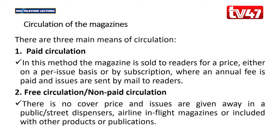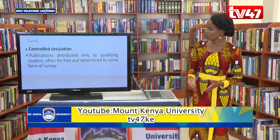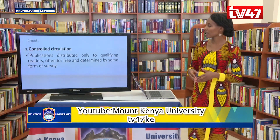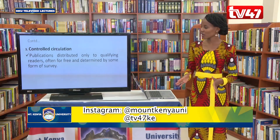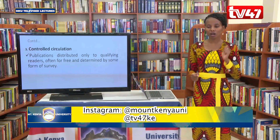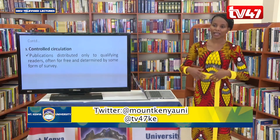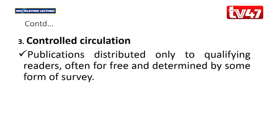There is also another means of circulation: controlled circulation. With controlled circulation, magazines are circulated only to qualifying readers. Most of the time they are offered for free, but only to those readers who qualify. To determine which group of people qualify to have the magazine, a survey is conducted. This is a method where publications are offered for free only to qualifying readers, and you must conduct a survey to conclude who qualifies.